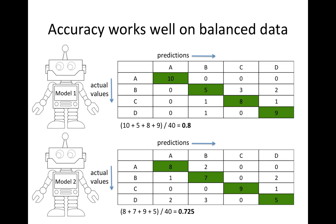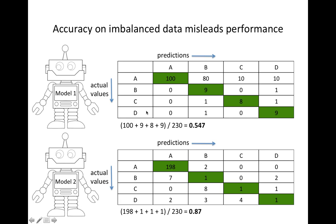Accuracy works well on balanced data. Balanced data means we have 10 examples for A, 10 for B, 10 for C, and 10 for D. But what about when the data is imbalanced? Imbalanced means we have 200 test data for class A, while B, C, and D only have 10 data each — we call that imbalanced data.